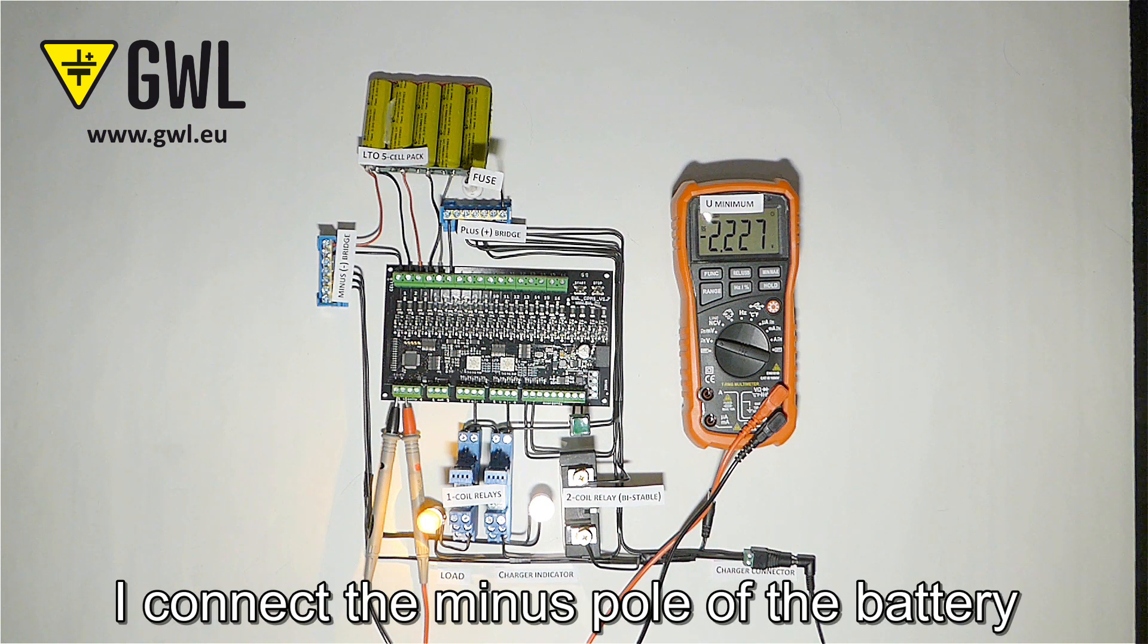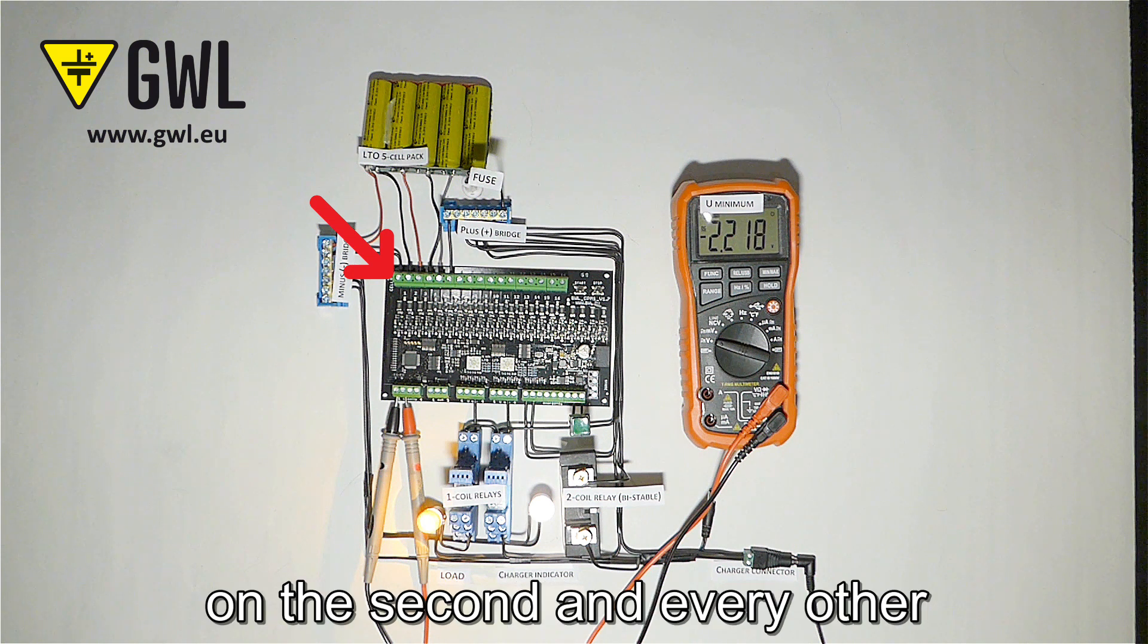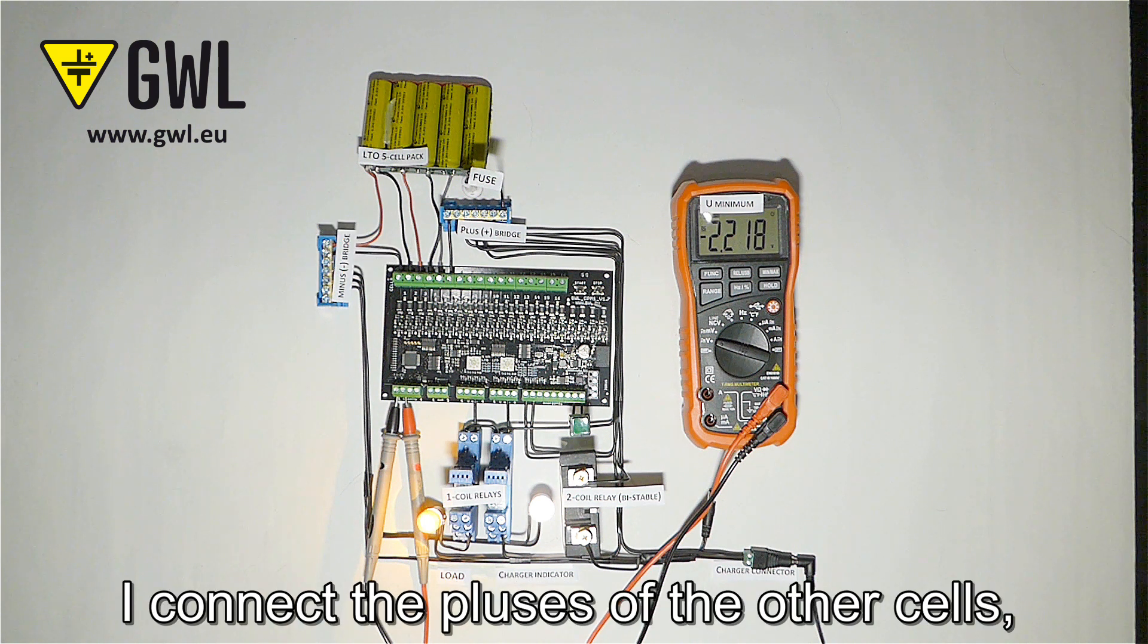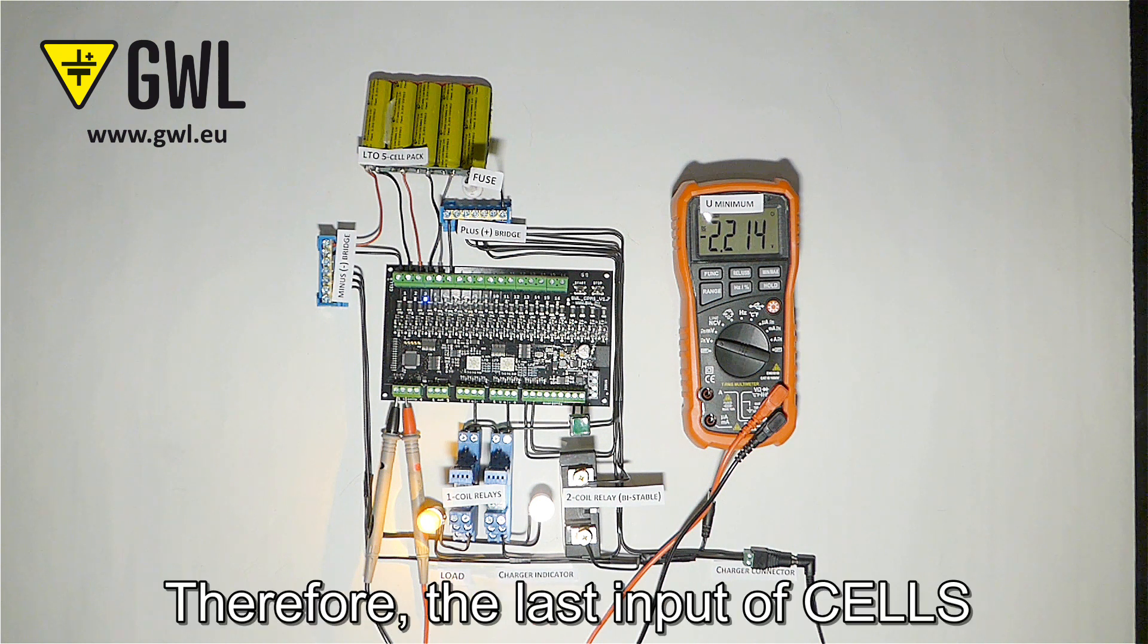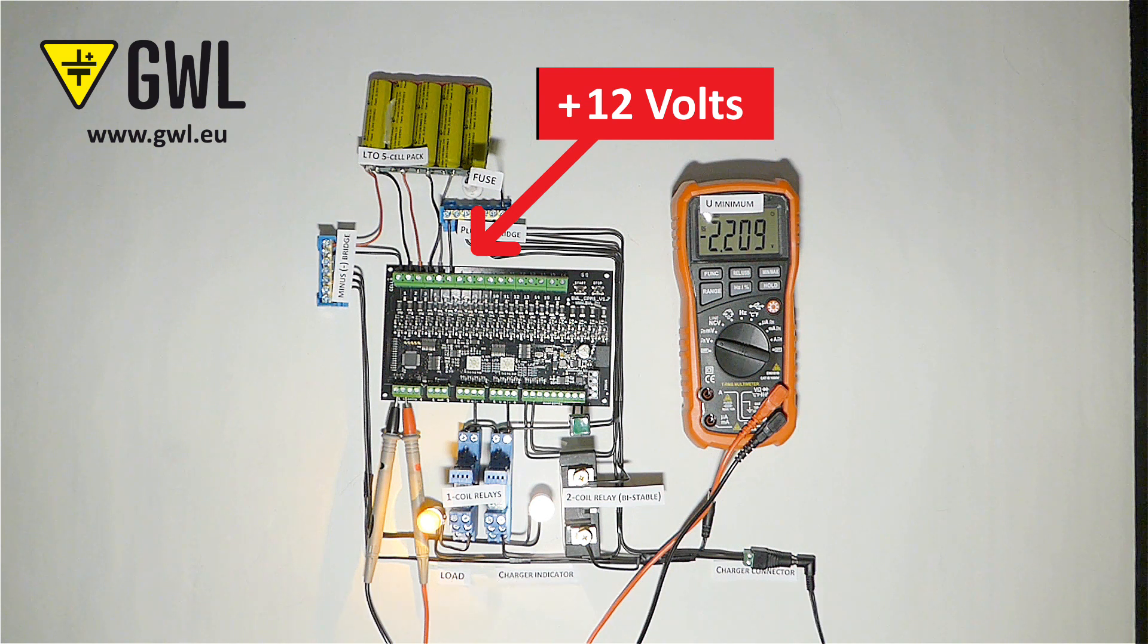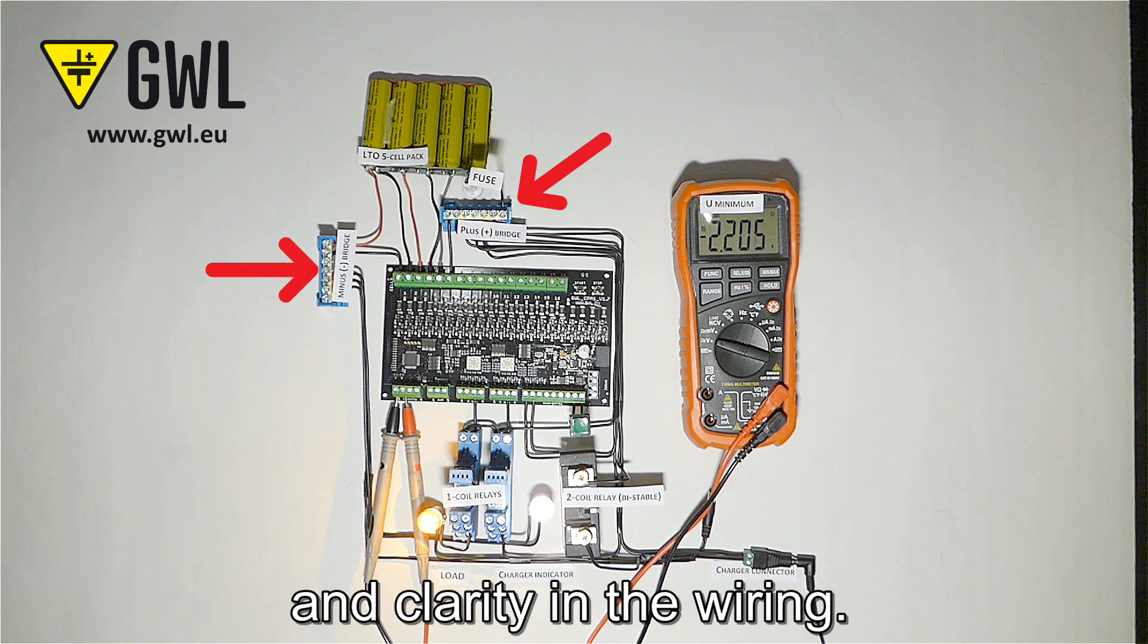I connect the minus pole of the battery to the first input of the cells terminals. On the second and every other I connect the pluses of the other cells one after another. Therefore the last input of the cells is the total battery voltage. The connection bridges help me to maintain order and clarity in the wiring.